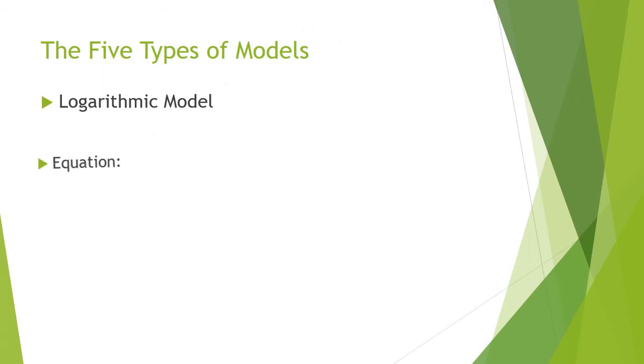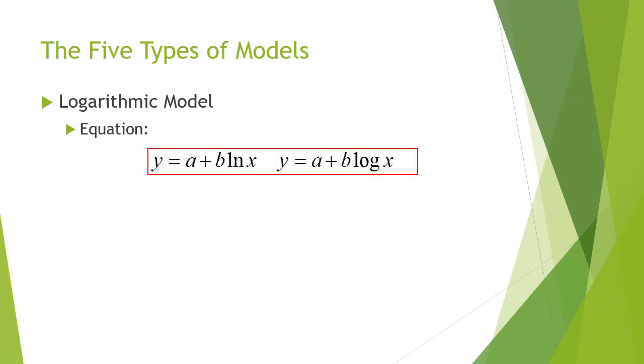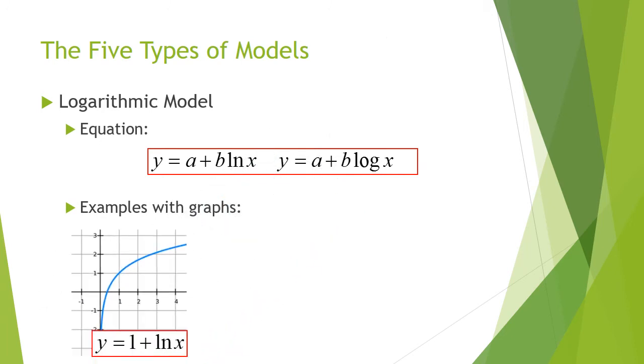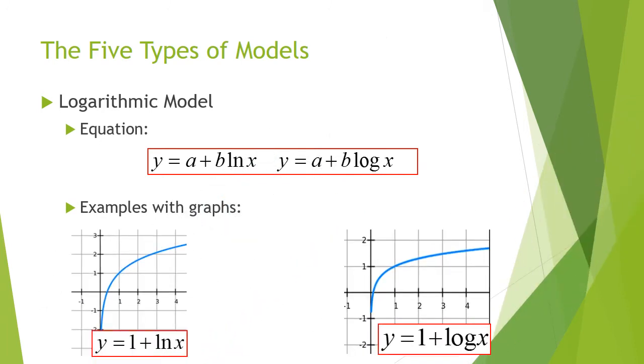Then we have the logarithmic model. The equation looks like one of these two: a plus b times the natural log of x, or a plus b times the log of x. Some examples. This would be 1 plus the natural log of x, 1 plus the common log of x.